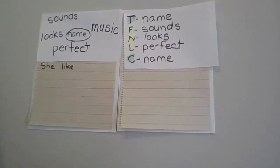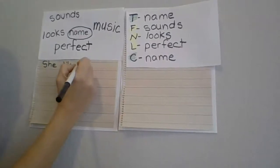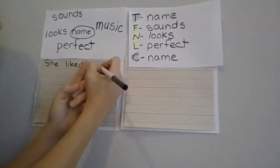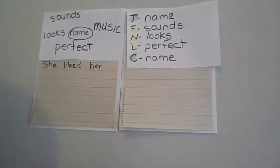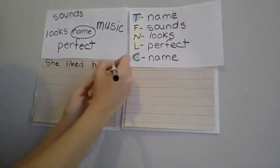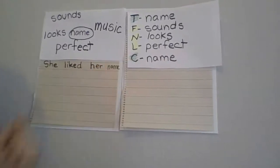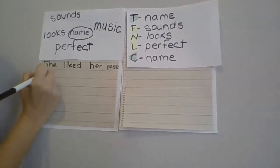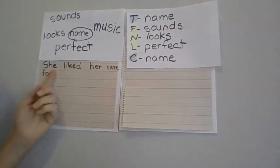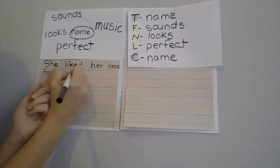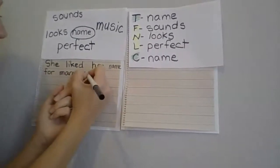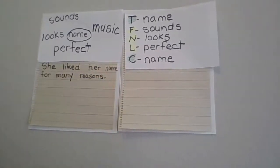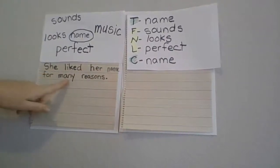If I want to say 'liked' — meaning it already happened — I add the suffix -ED. She liked. Finger space between 'her.' Finger space. 'Name.' She liked her name for many reasons. Period at the end. She liked her name for many reasons.